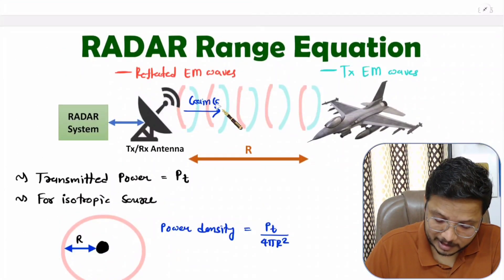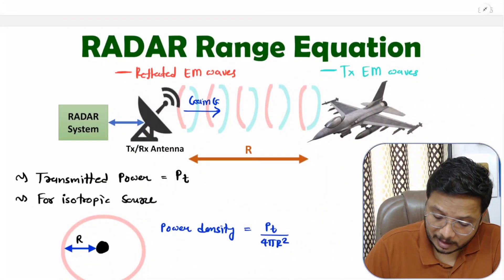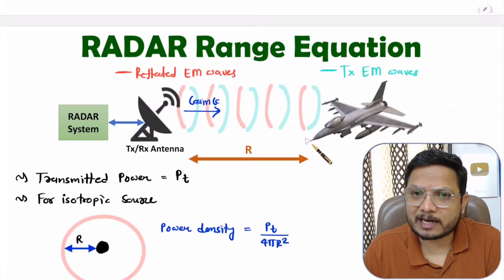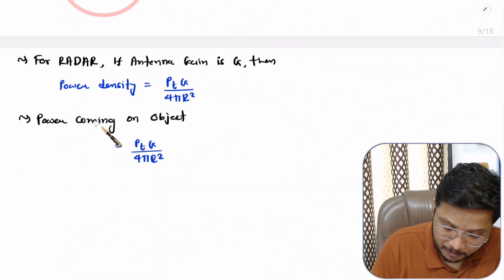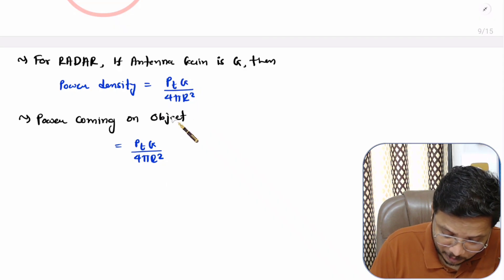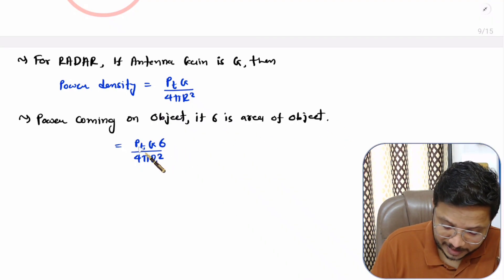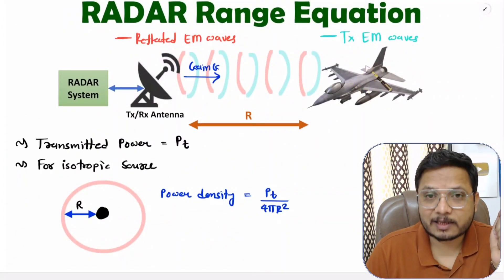Now this object comes into the picture. The power density arriving at the object — if the object has a cross-section area sigma — then the power coming on the object is power density multiplied by the area of the object sigma. So the power coming on the object is Pt·G·σ divided by 4πr².